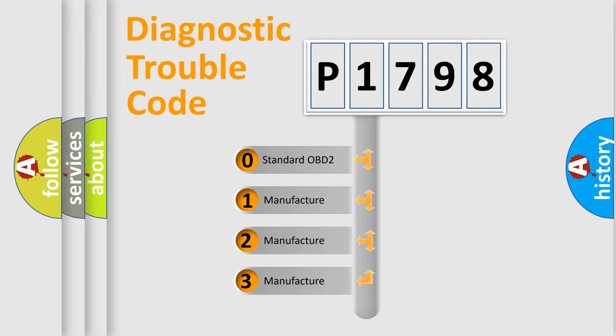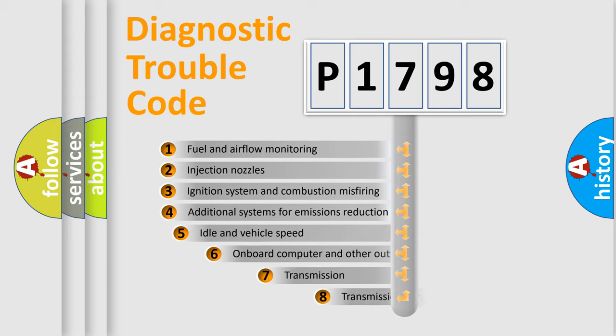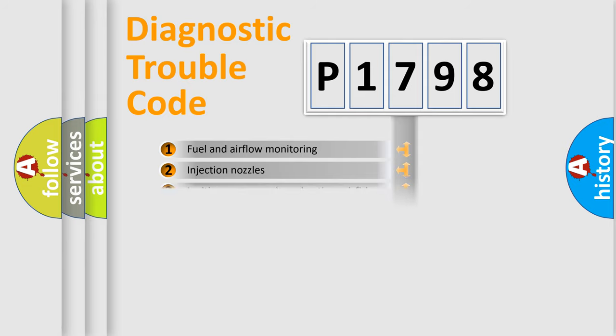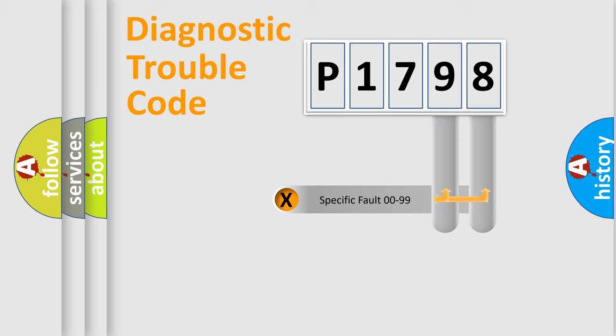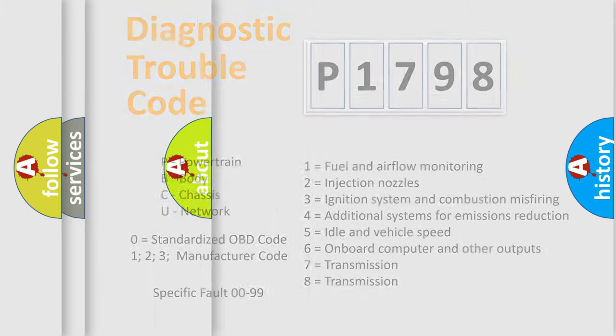If the second character is expressed as zero, it is a standardized error. In the case of numbers 1, 2, 3, it is a more prestigious expression of the car-specific error. The third character specifies a subset of errors. The distribution shown is valid only for the standardized DTC code. Only the last two characters define the specific fault of the group. Let's not forget that such a division is valid only if the other character code is expressed by the number zero.